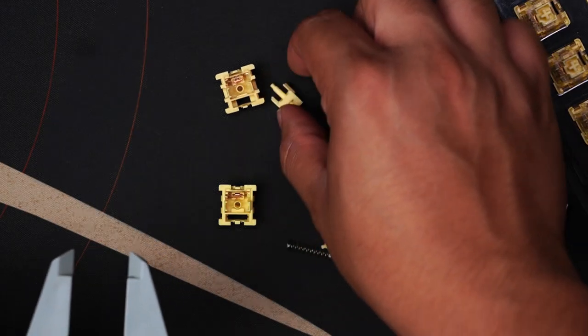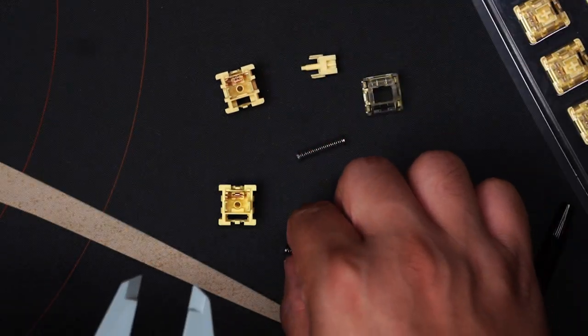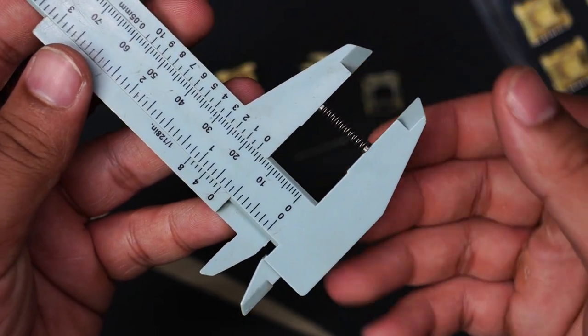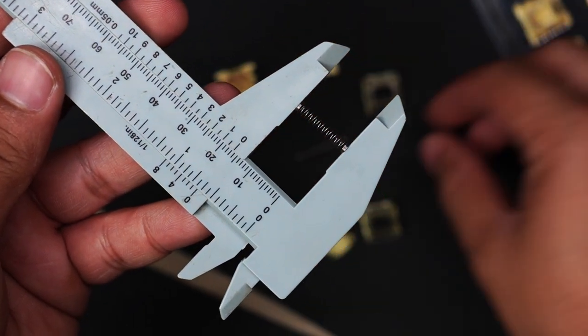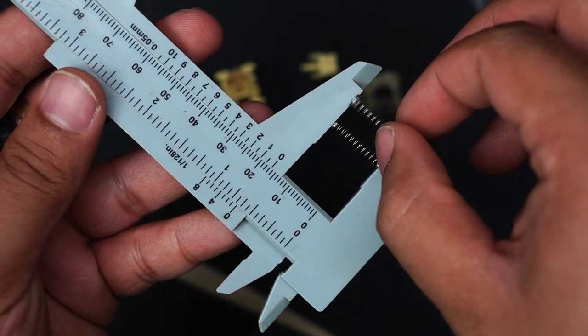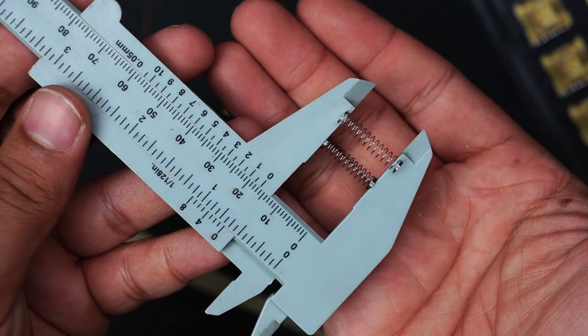The spring is also slightly longer than the original spring. Coming in at 20mm compared to the 18mm of the non-Pro version. And is already lubed with Krytox 105 grade 0, I'm guessing.